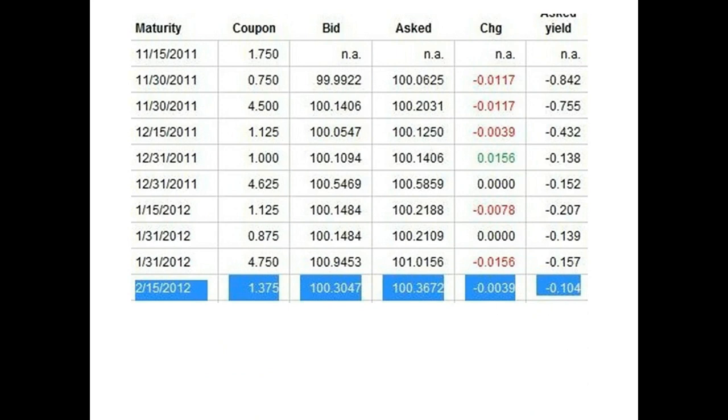We can see that it has a coupon rate of 1.375%. Par value is $1,000. Therefore, it pays interest of $13.75 per year in 2 semi-annual installments, so it would make 2 payments of $6.88 each year. The payments are made in January and July of each year.